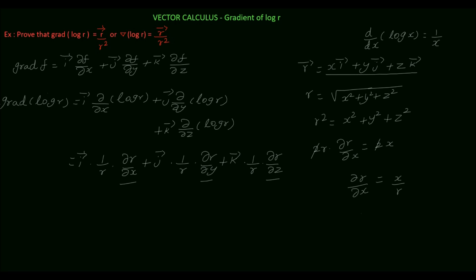Likewise, ∂r/∂y equals y/r and ∂r/∂z equals z/r. Substituting these values: i vector times (1/r) times (x/r), plus j vector times (1/r) times (y/r), plus k vector times (1/r) times (z/r).